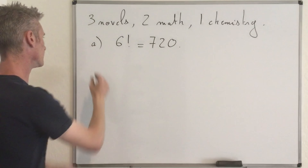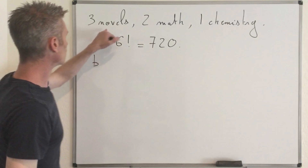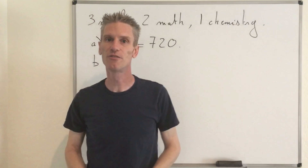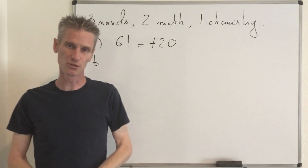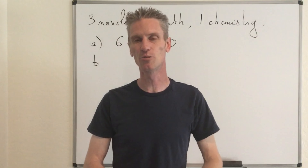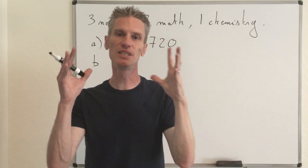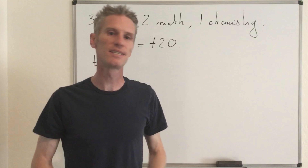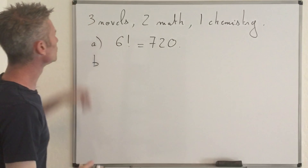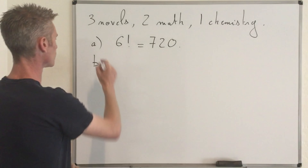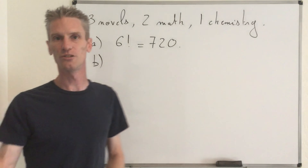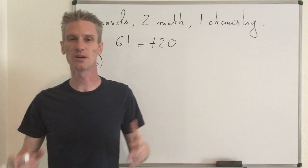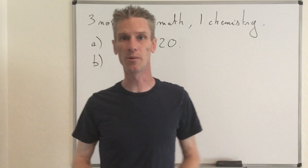Now, for the second question, we assume that the novels must be together and the two math books must be together — basically books of the same topic must form a group, a block. I'm going to use the same trick as in the previous problem about boys and girls, which was problem 1.7.